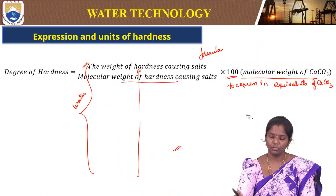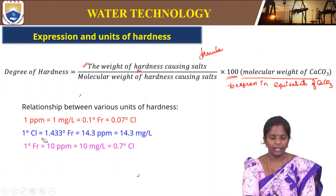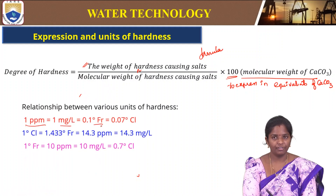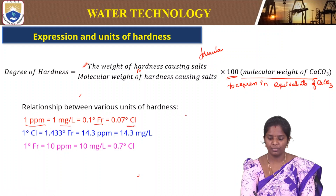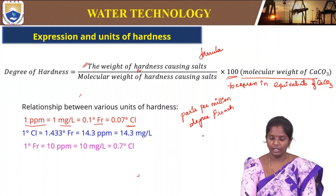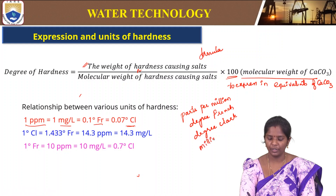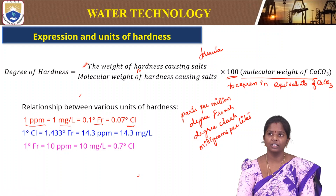We also have several units for expressing hardness. The units generally used are ppm (parts per million), milligrams per liter, degree French, and degree Clark. Milligram per liter means mg per liter. These are the different units used to express the hardness of any water sample.